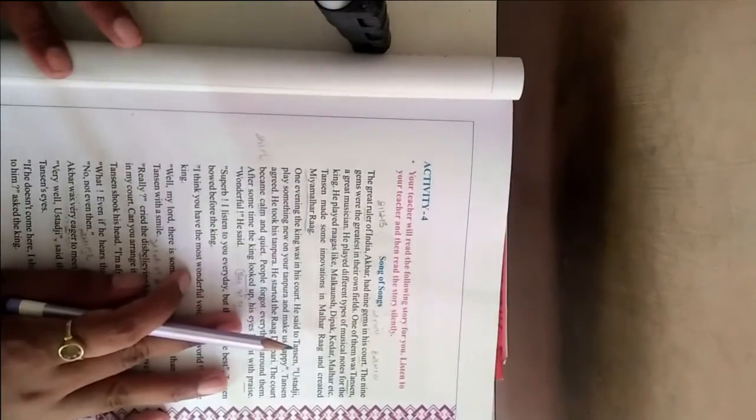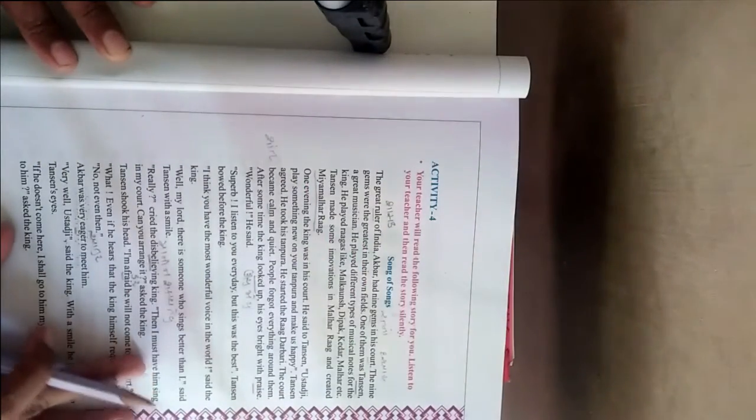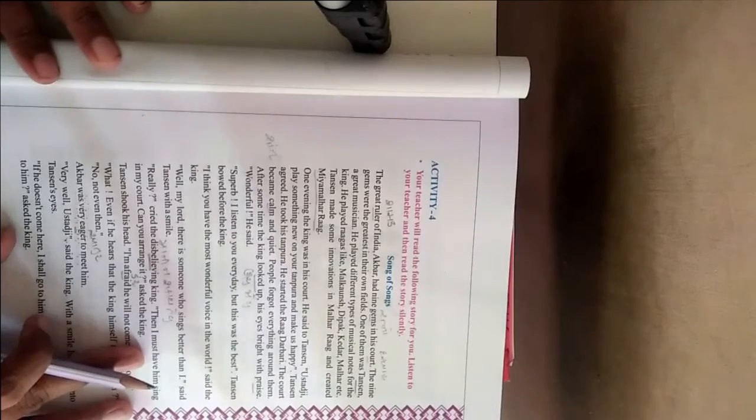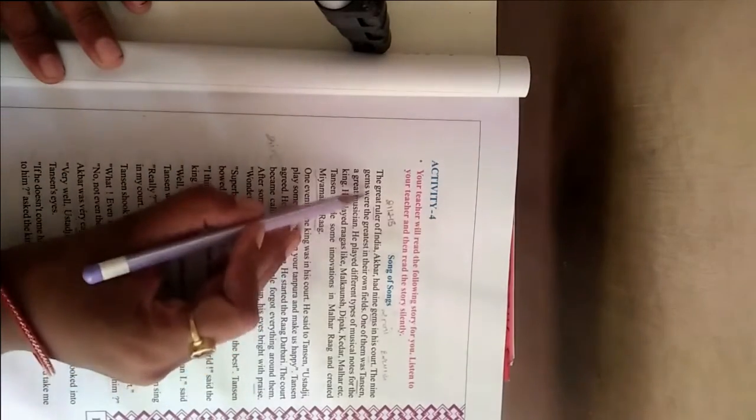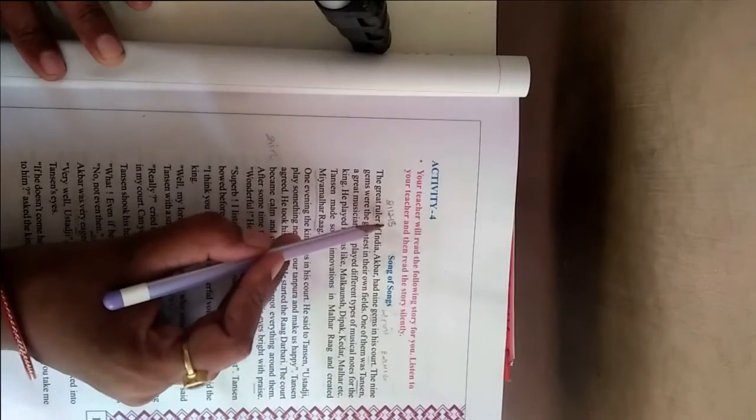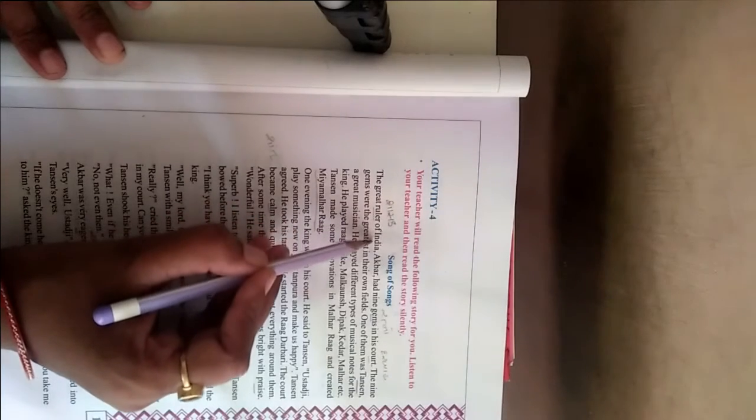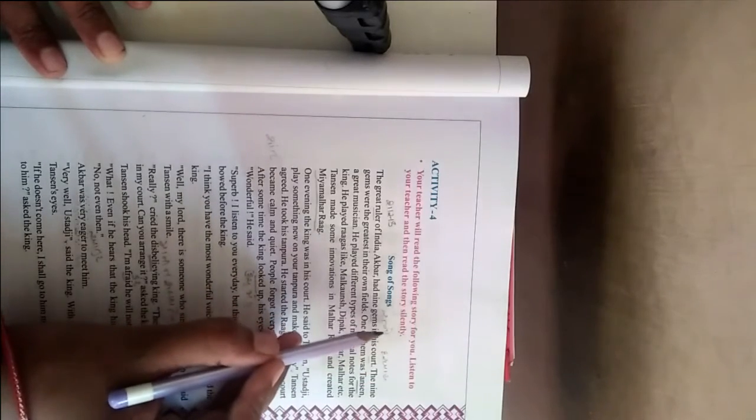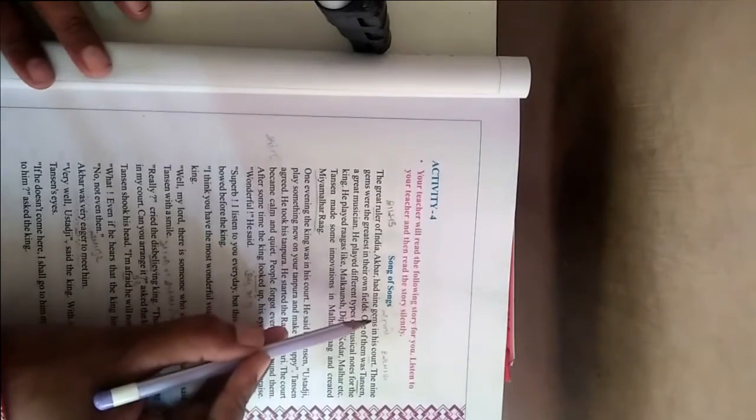The Great Ruler. Ruler means king. The words which are underlined, you have to write in your notebook. The great ruler of India, Akbar, has nine gems in his court. Court means darbar. And gems means jewels. There were nine jewels in his darbar.